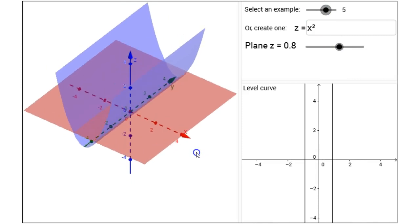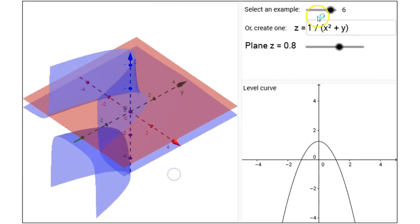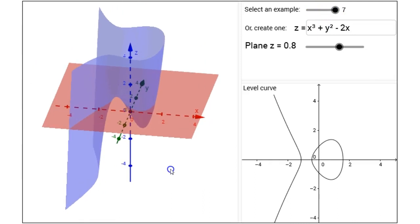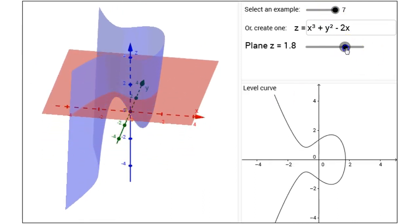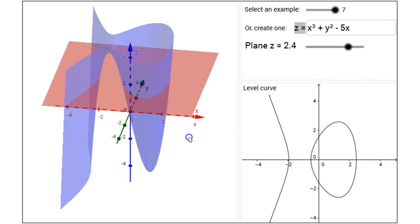And don't forget to move around the three-dimensional view to get a better picture of your surface and plane, and you can click in the box with the equation to modify the equation or create your own surface. So try some different coefficients and see how that adjusts the picture.